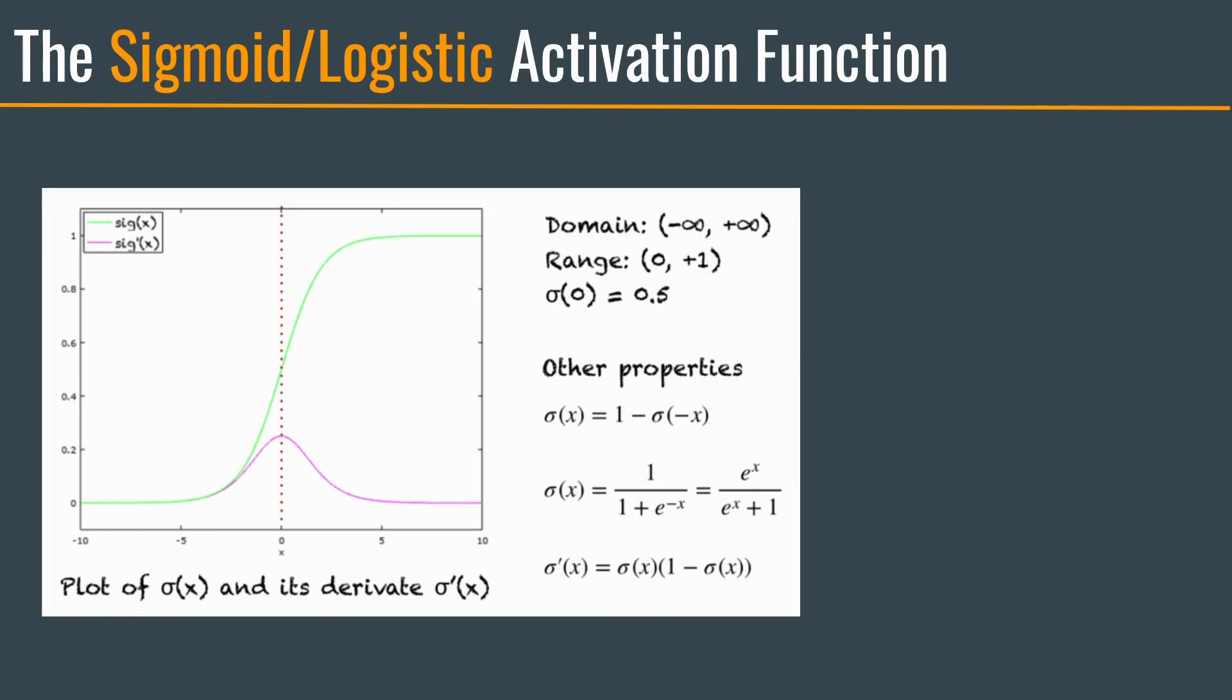As you can see, the graph of a sigmoid activation function looks like S, ranging from 0 to 1. The domain of the sigmoid activation function is from negative infinity to positive infinity, which is going to be the general case for all activation functions. That means this function can take in any value, but it will always output values between 0 to 1. This is generally useful when you want your model to output probabilities, like in a binary classification task.